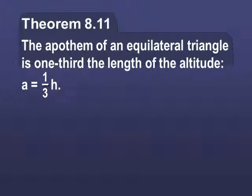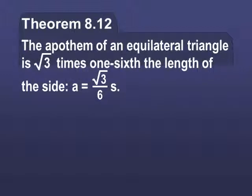The apothem of an equilateral triangle is one-third the length of the altitude. So, given the altitude of an equilateral triangle, you can find the height. That's what that means. So, your half height times base, you can find the height if you're given the apothem. The apothem of an equilateral triangle is the square root of 3 times one-sixth the length of a side. So, if you have the side, you can find the apothem of an equilateral triangle only. Remember, it has to be a regular triangle. So, that would give you the square root of 3 over 6 times side will give you the apothem. So, we've just got all kinds of formulas for an equilateral triangle.